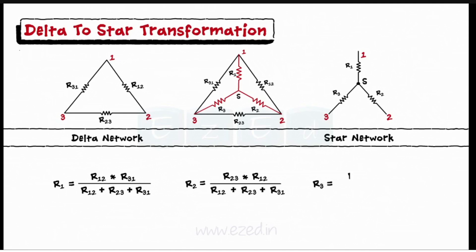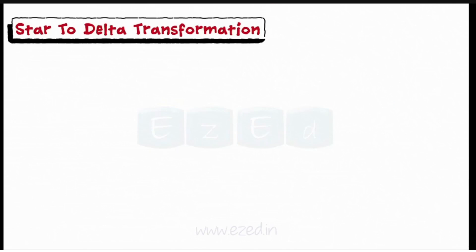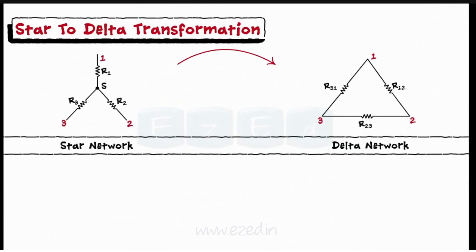And R3 equals R31 into R23 upon R12 plus R23 plus R31. In the similar way, we can convert star structure into delta structure.